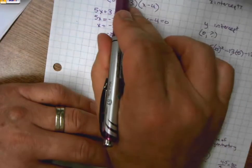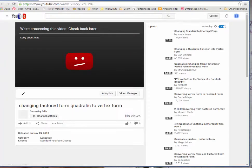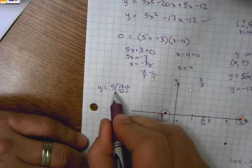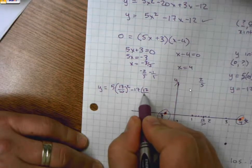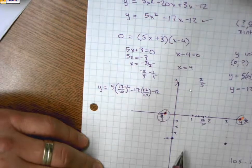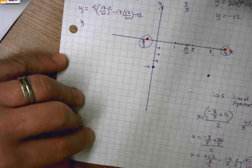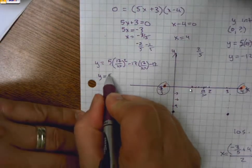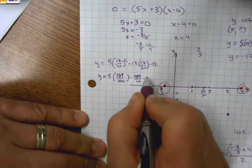In other words, find y is equal to 5 times 17/10 squared. Y is equal to 5 times 17/10 squared minus 17 times 17/10 minus 12. That would give me the value of y that matches with this line of symmetry. So I could do this out by hand if I wanted. 289/100 minus 289/10 minus 12.